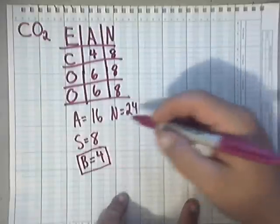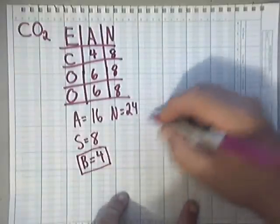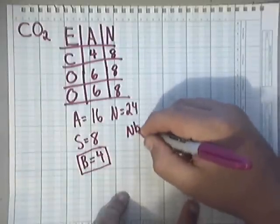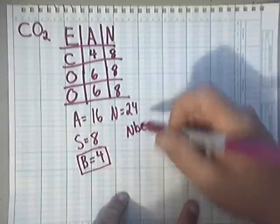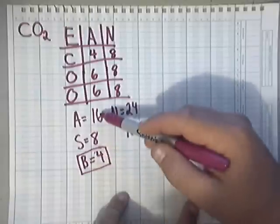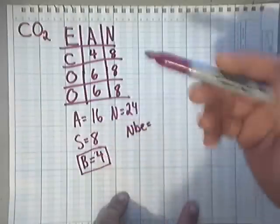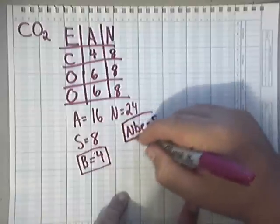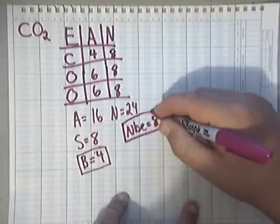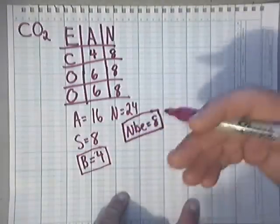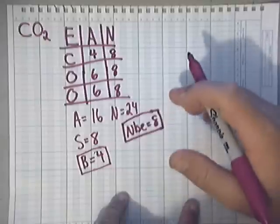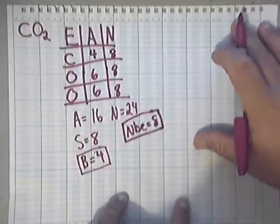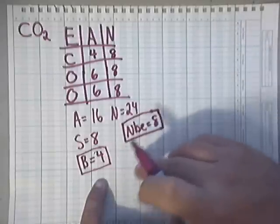Now the next thing I need to do is get my non-bonding electrons, my NBE. To get my NBE, all I have to do is subtract my A minus S. 16 minus 8 is 8. Now, once again, if you don't understand where I got these numbers and how I subtracted or added, just go back and watch the first video. Now, what we need to do now is try to draw this.